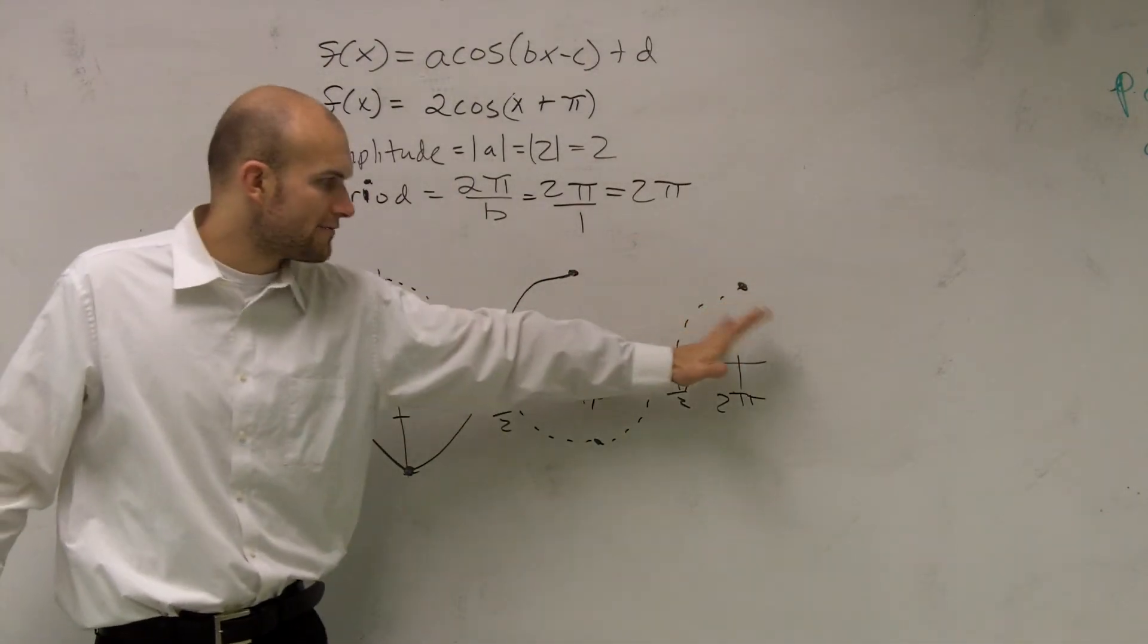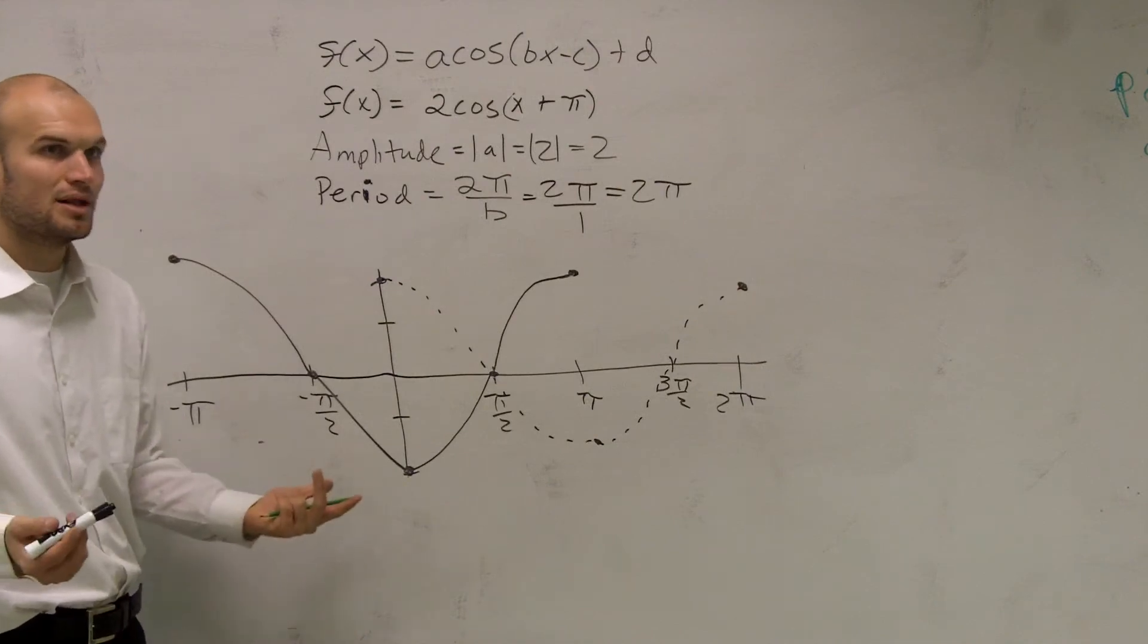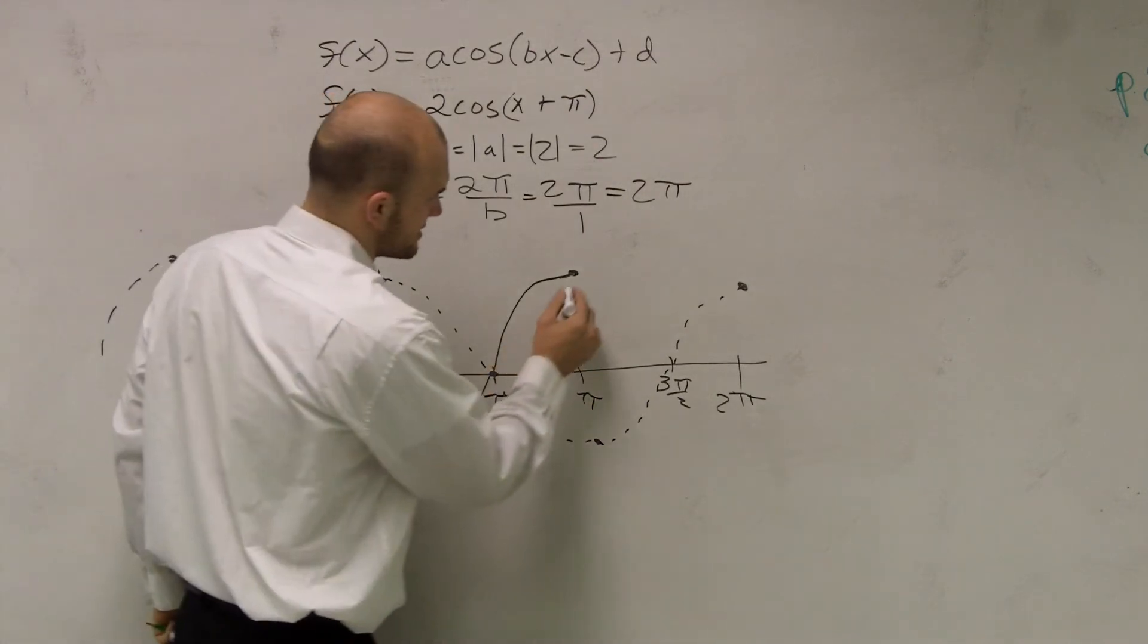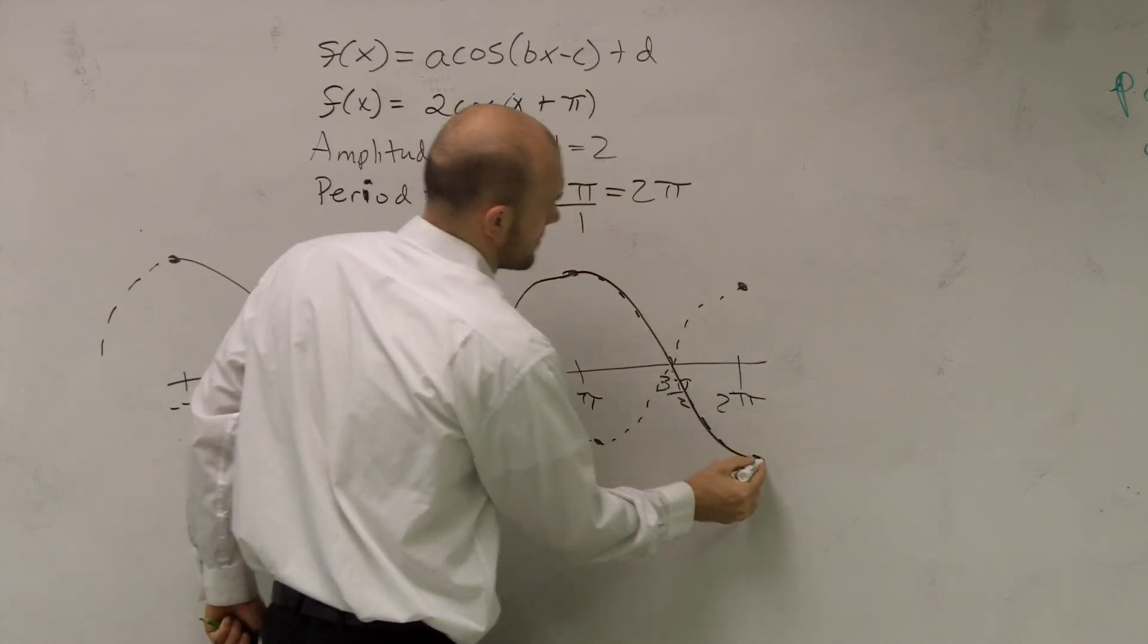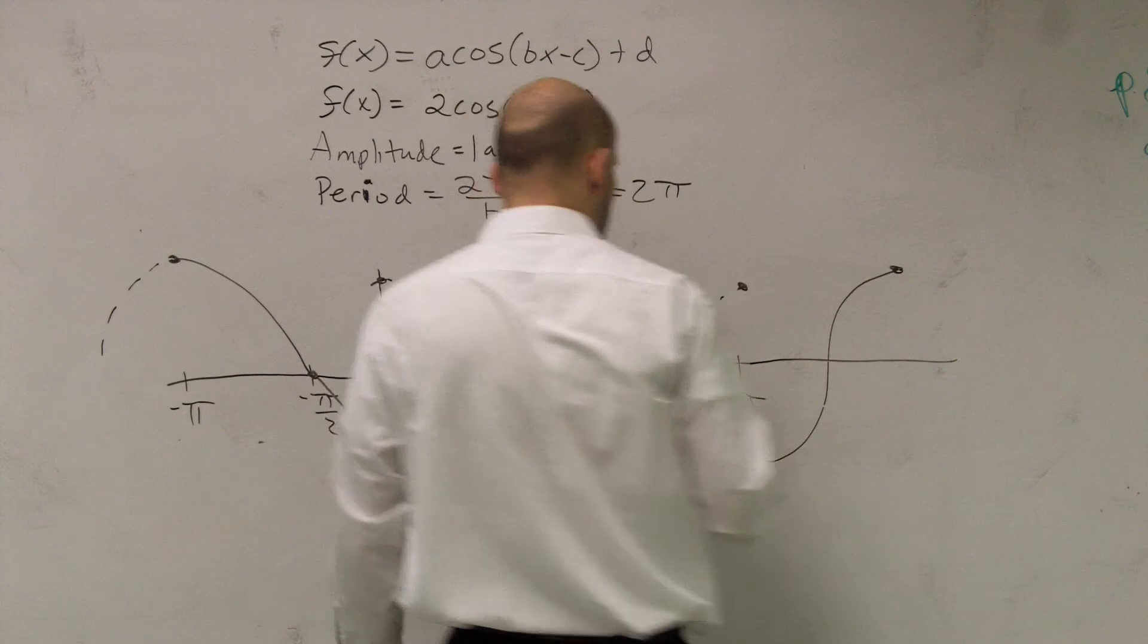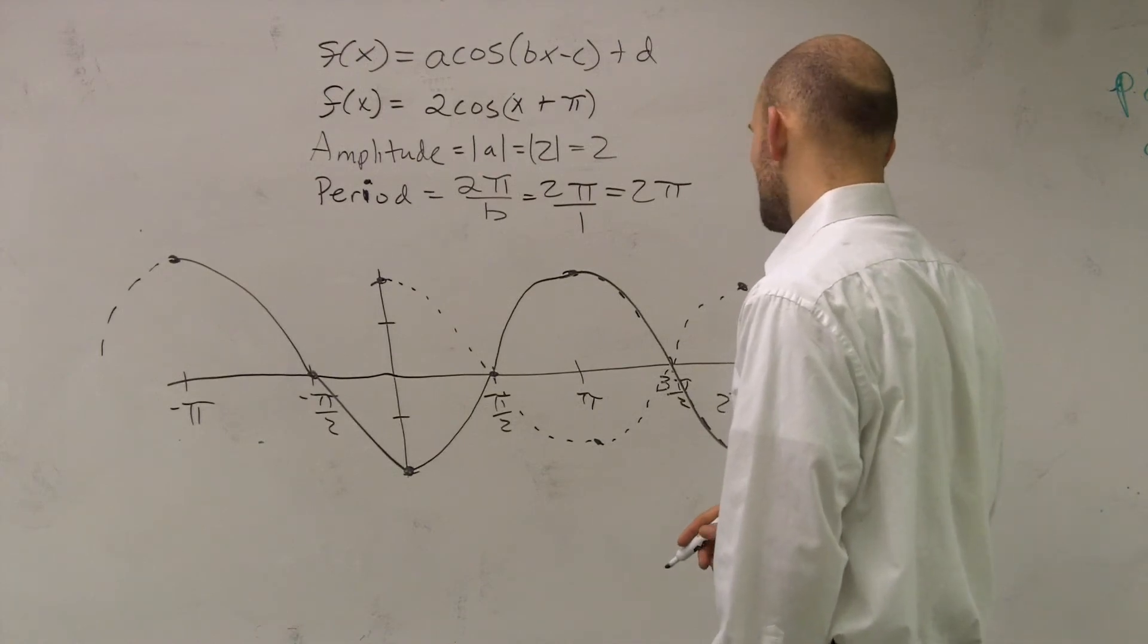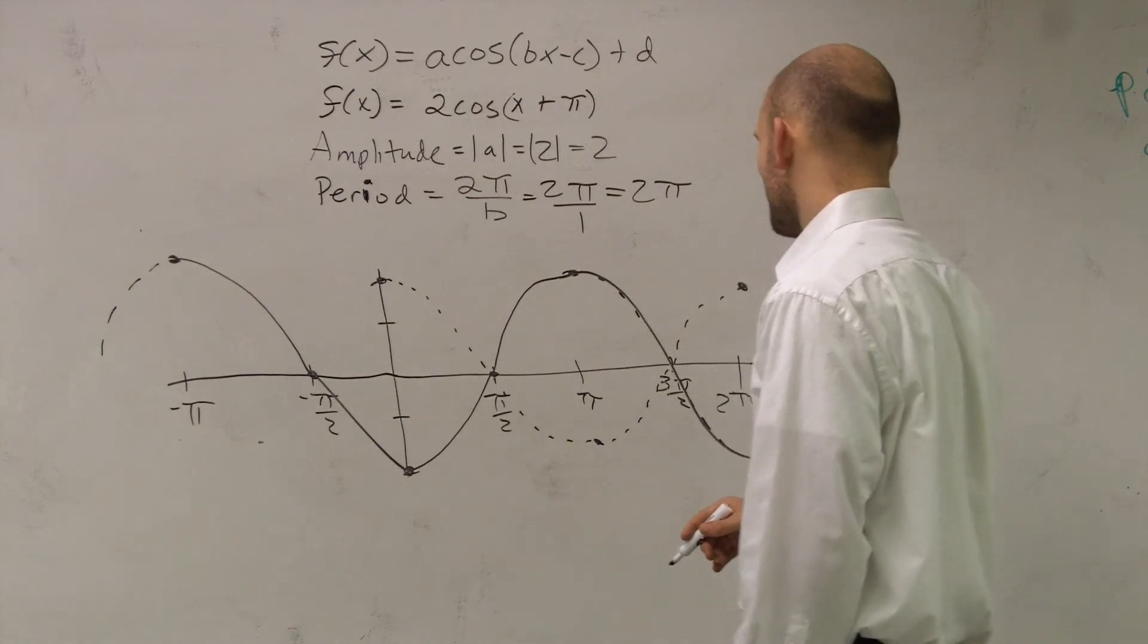But now remember guys, you need to graph for two periods, and plus, these go on forever. So I can just continue this graph. Like this. So therefore to complete my two periods, so this would be 2π over 4π over 4. And then you guys can just go through it.